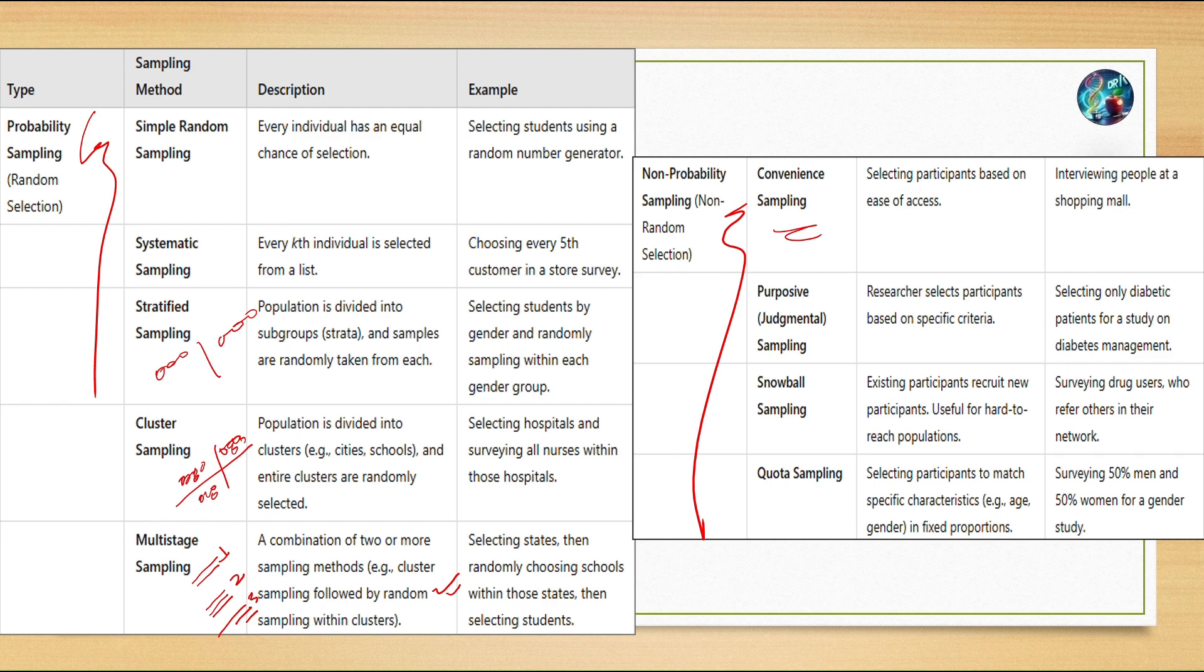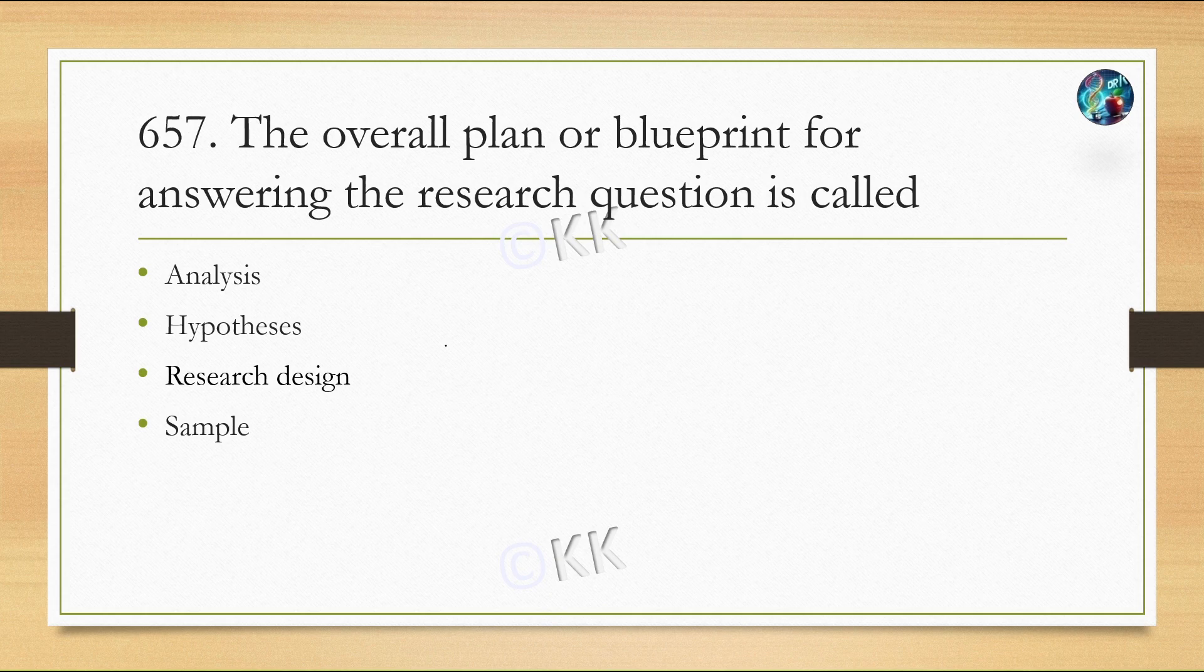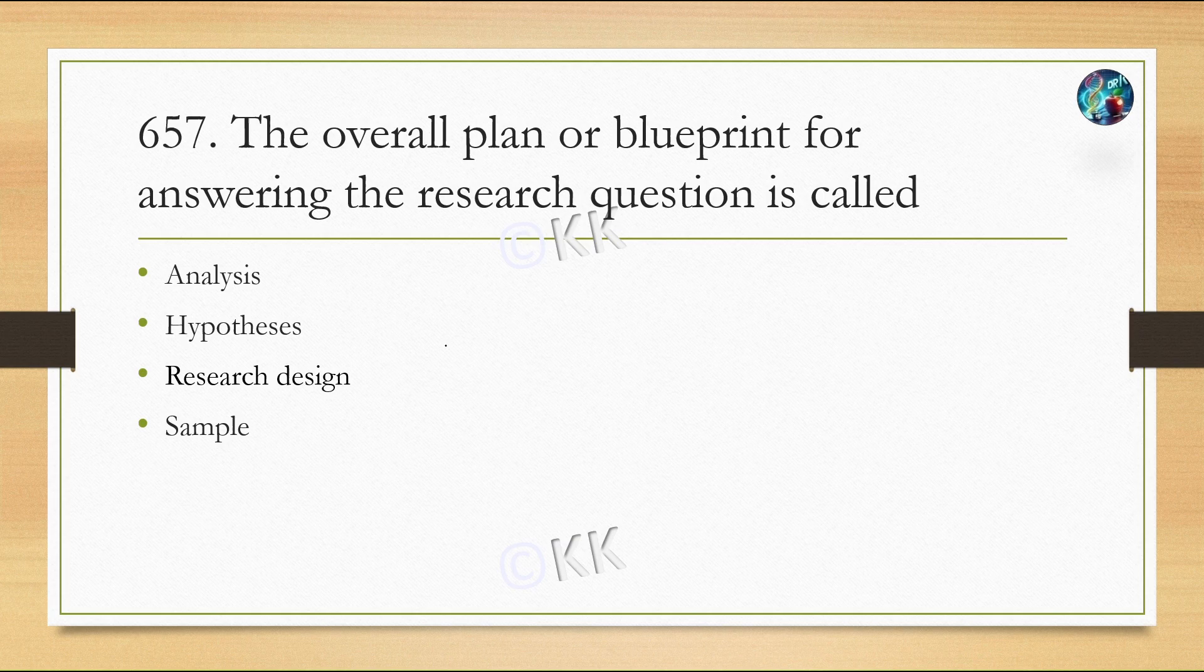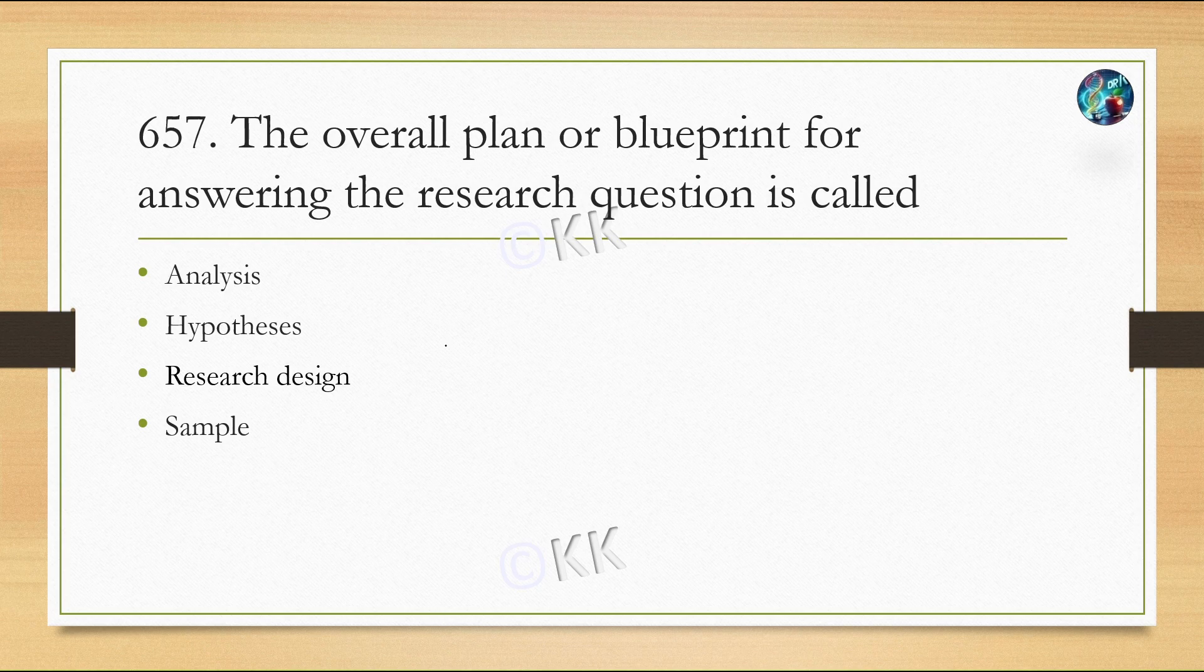Next question: The overall plan or blueprint for answering the research question is called: Option A, analysis; Option B, hypothesis; Option C, research design; Option D, sample. The correct option is Option C, research design.